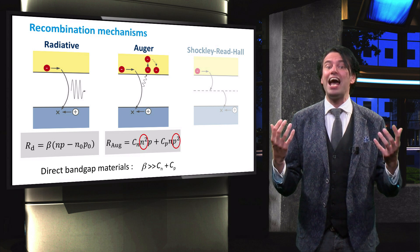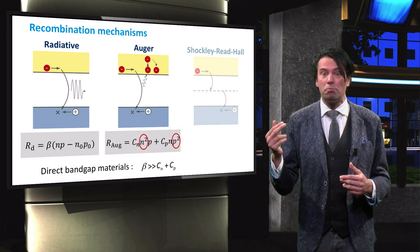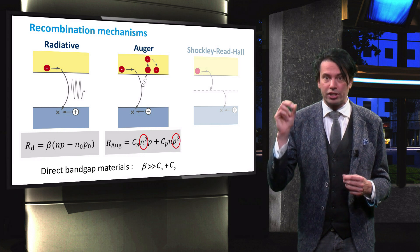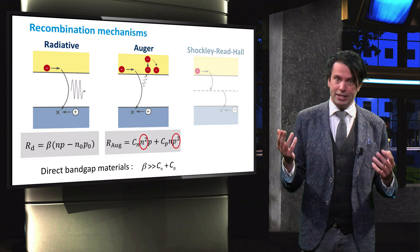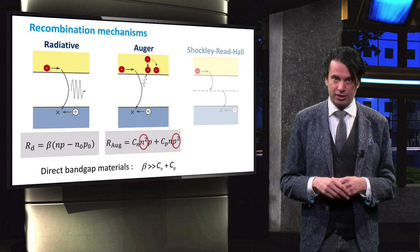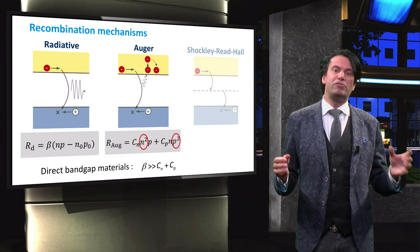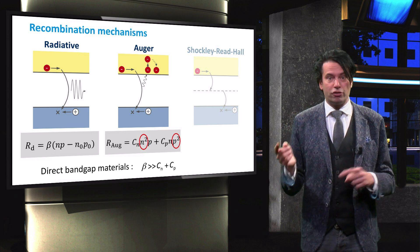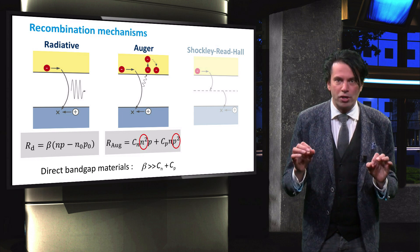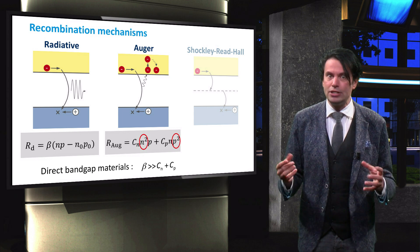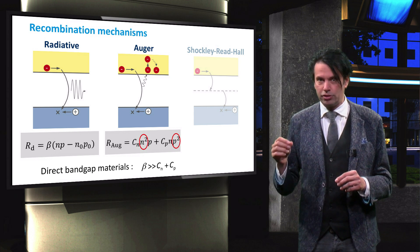At very high injection levels, the Auger recombination will start to play a significant role, which will lead to increased bulk recombination. As discussed in the PV1X course and at the start of this course, increased bulk recombination will lead to an increase of the cell's series resistance.